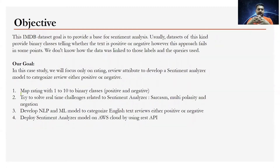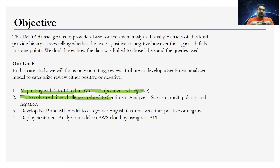We'll divide this problem into small tasks. First, map ratings from 1–10 to binary classification (positive/negative). Second, in the preprocessing and feature engineering phase, solve real-time industry-level problems such as sarcasm, multi-polarity, and negation. After solving these, develop the best model using NLP and machine learning techniques to categorize reviews as positive or negative. Finally, deploy the analyzer model on AWS cloud using REST APIs.